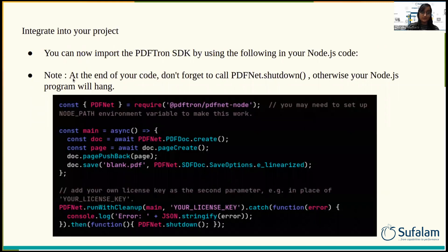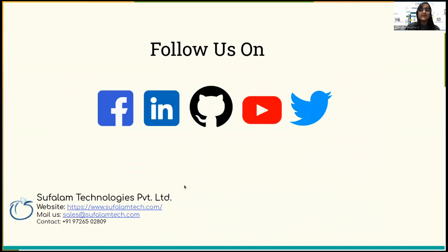To integrate into your project, you can import the PDFtron SDK using the following in your Node.js code. At the end of the code, don't forget to call PDFNet.shutdown(); otherwise, your Node.js program will hang. Thank you guys for watching.